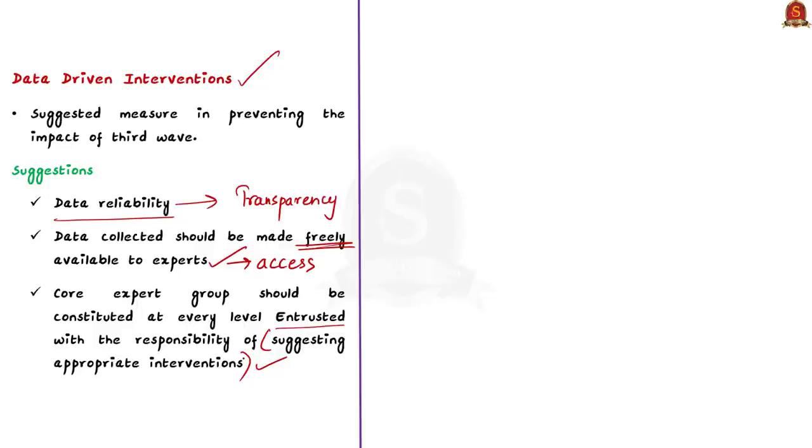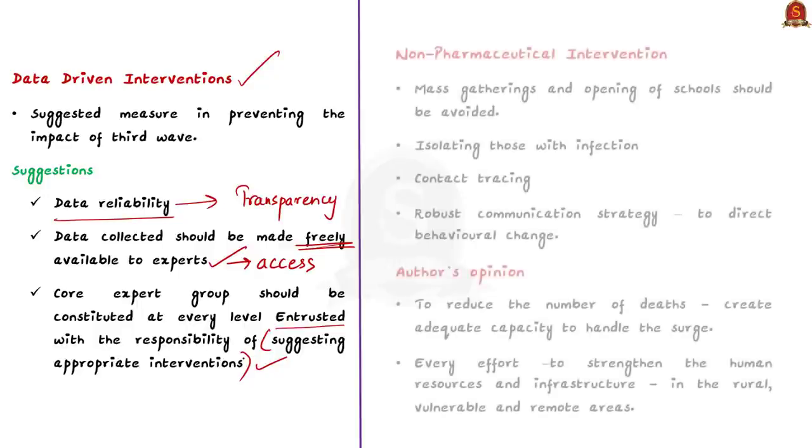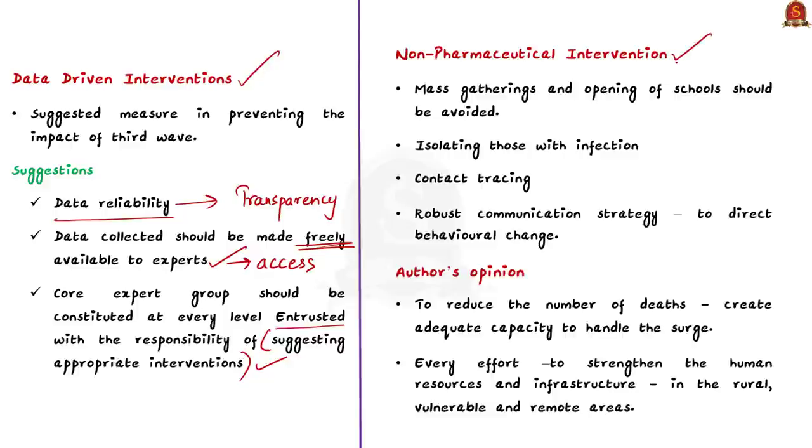So far we have discussed about the vaccination program, preventive techniques, and data-driven interventions. Now, let us see about the non-pharmaceutical interventions. According to the article, mass gatherings and openings of schools should be avoided at all cost. Apart from that, isolating those with infection, contact tracing and implementing infection prevention strategies in health care settings should also be carried out. The author highlights communication strategy as one of the important critical determinants that ensures the success of any intervention. A robust communication strategy to direct behavioral change is important for subverting the third wave.